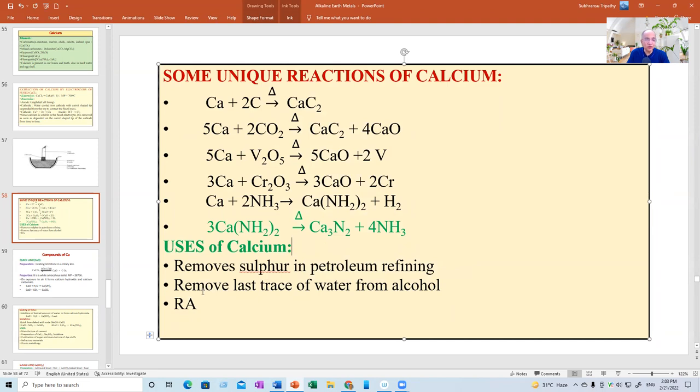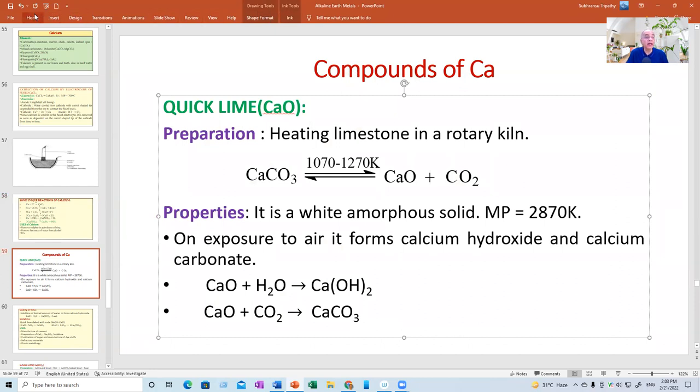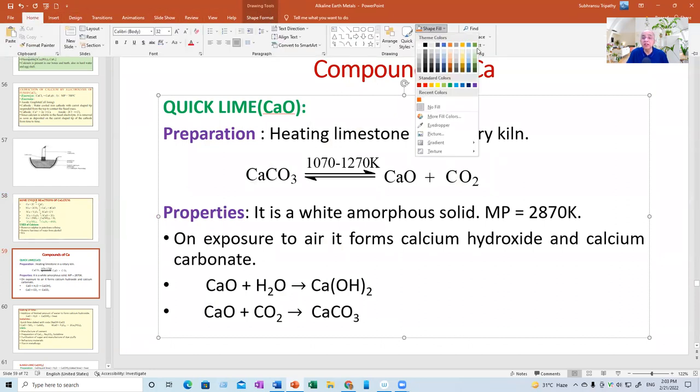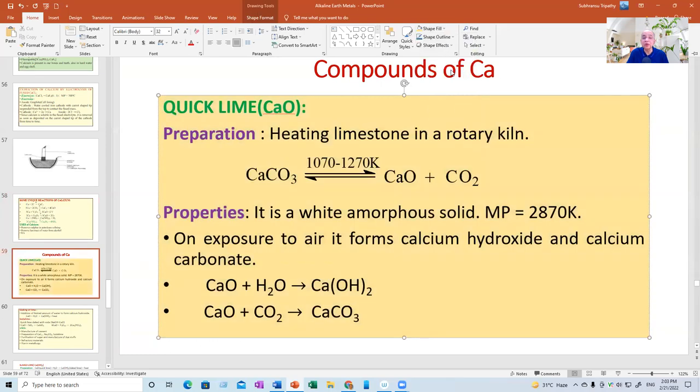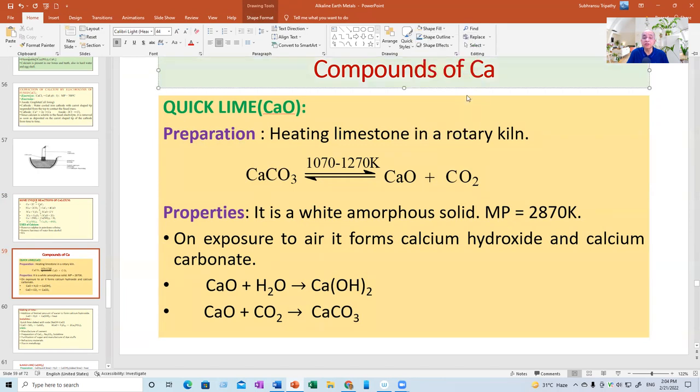Now, calcium is used. There are hundreds and thousands of applications. You are not supposed to remember everything. Calcium is used to remove sulfur in petroleum refining. It is used to remove last trace of water from alcohol to make it ultra dry, 100% dry. At the end, calcium, it will remove all water. And as a reducing agent for extraction of many elements.